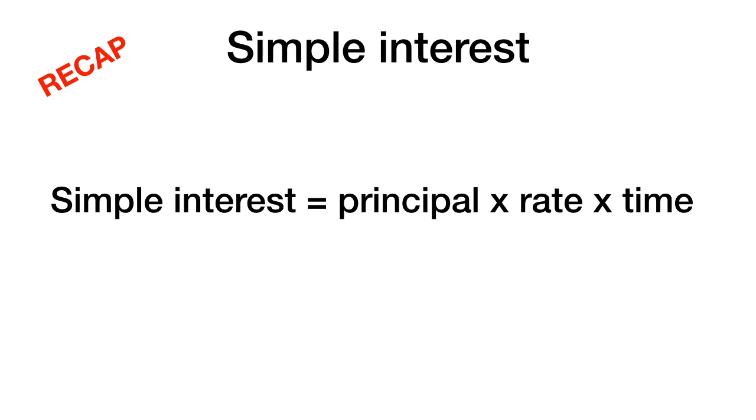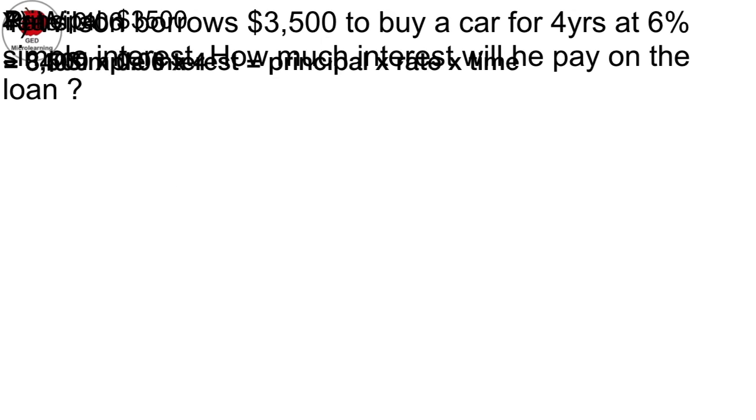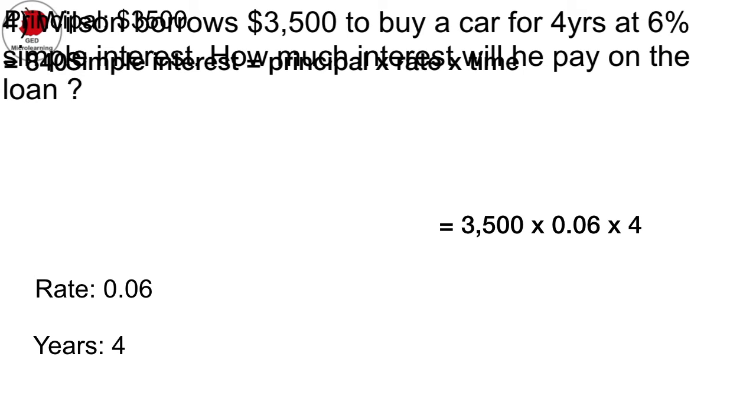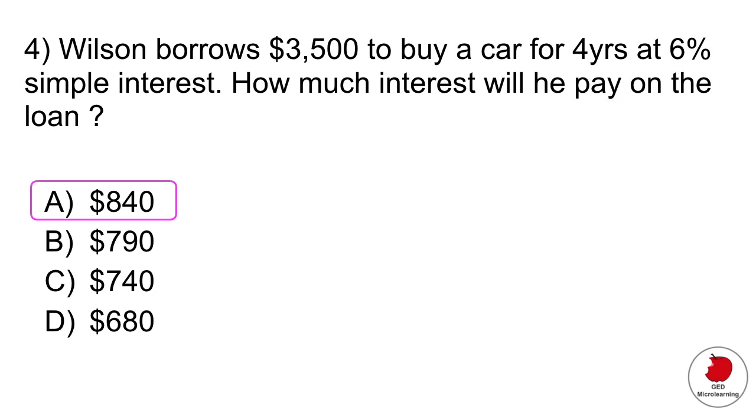This formula is really useful to know. You calculate simple interest by multiplying the principal, so the principal is the amount of money that you borrowed, multiplied by the rate, meaning the percentage that you're borrowing at, multiplied by the time that you're going to have the loan for. So the principal is 3500, the rate is 6% or 0.06 in decimals, and the time is four years. So you'd go ahead and plug those numbers into your equation. And that tells you that he's going to pay $840 in interest on the loan. Answer A.